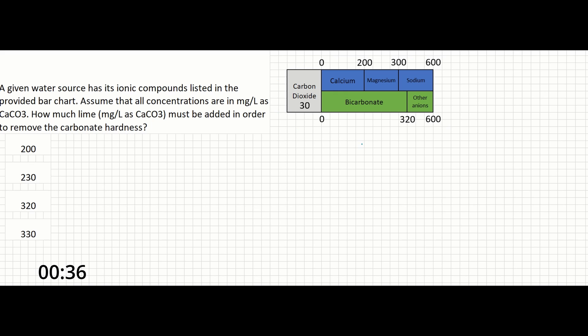Let's explain the bar chart. The top bar are the cations or positively charged ions. The bottom are the anions or negatively charged ions.